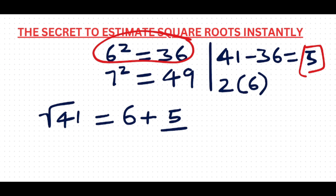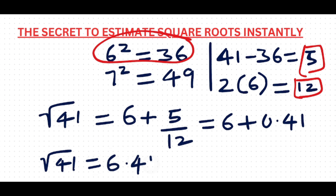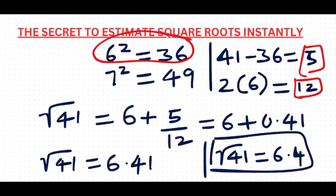To find the denominator, you do 2 times the square root of 36, which is 6. So 2 times 6 gives you 12, and 12 is the denominator. So you have 6 plus 5 over 12. The decimal value of 5 over 12 is 0.41, so the square root of 41 equals 6.41, which rounds to 6.4.